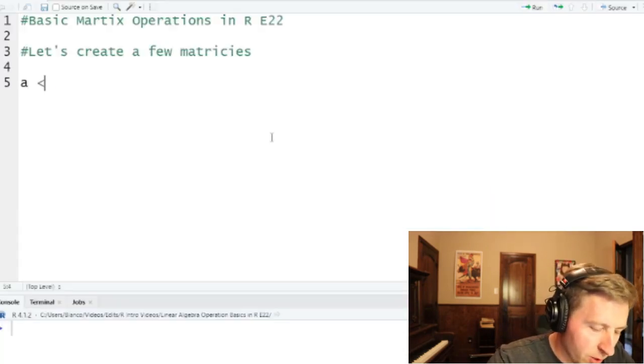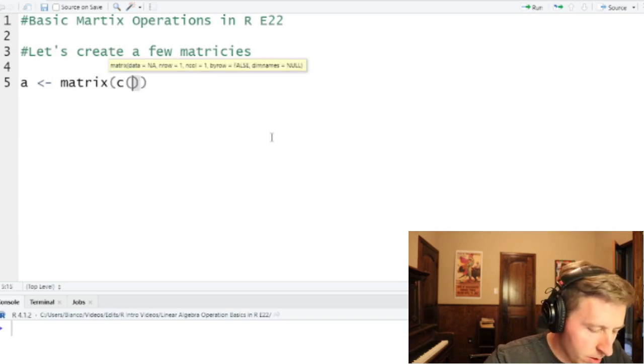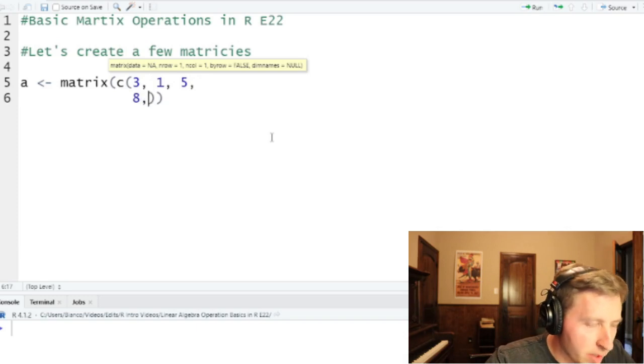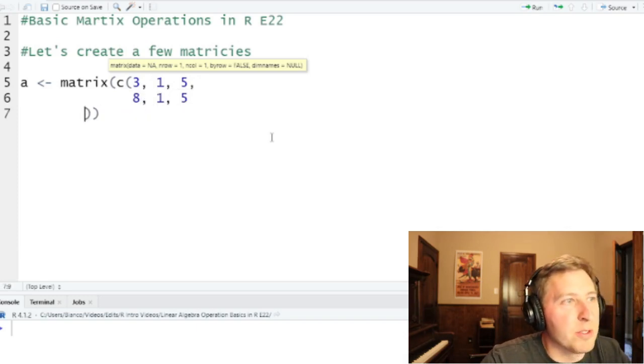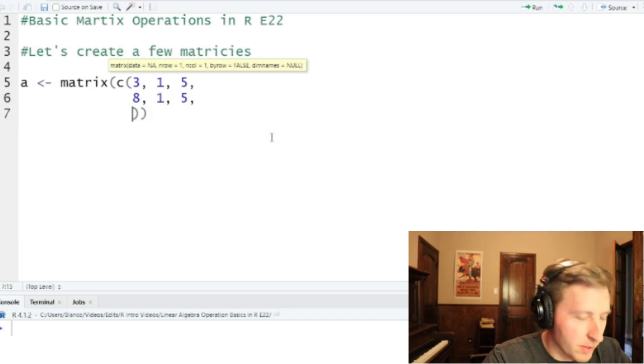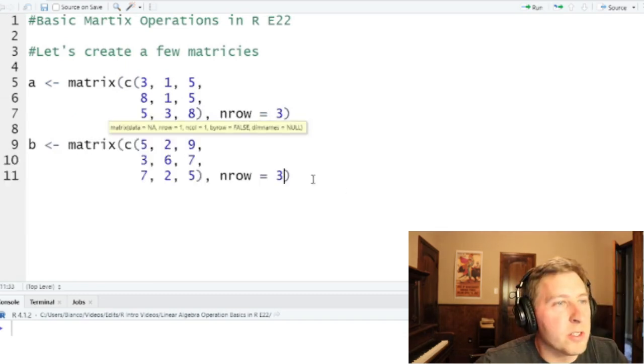So we'll create this first one called A and we'll create the matrix using the matrix function as we saw in the previous video. I'm going to use an enter here just because I like to keep track of these as I mentally build these out, but it's up to you how you do it. Just don't forget to add the commas. And now we're going to create a matrix called B. Let's just run these real quick.